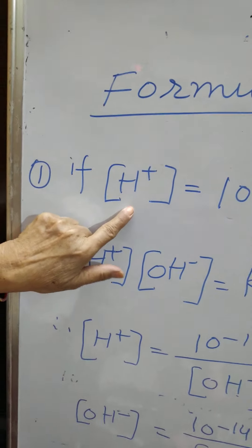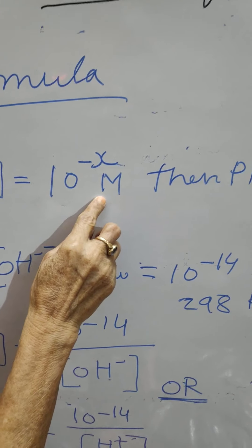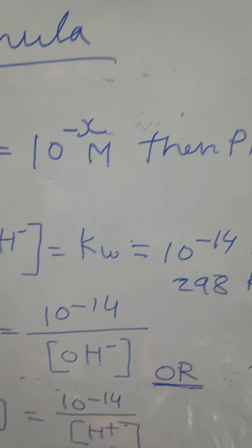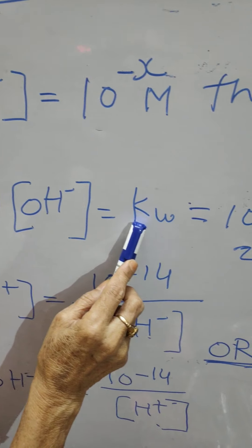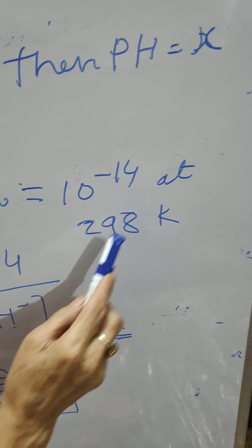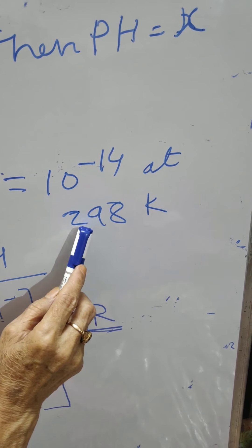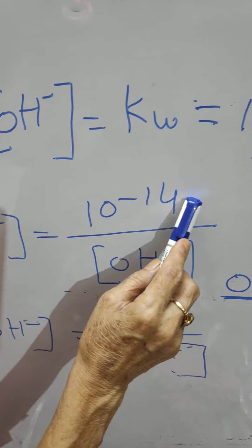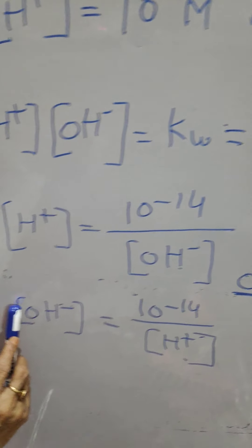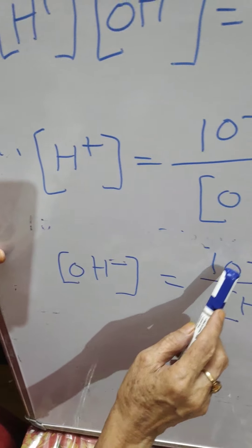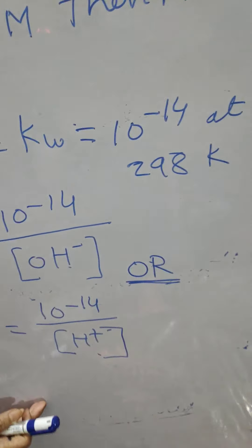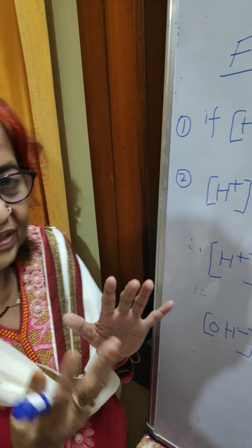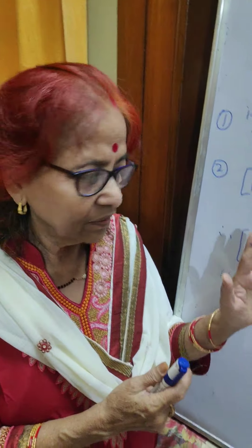The second formula: if H ion equals 10^-X M, then pH equals X. H ion × OH ion = Kw = 10^-14 at 298 Kelvin temperature. Therefore H ion = 10^-14 / OH ion. With the help of this formula, you can identify how strong or weak the acid or base is — moderate base or moderate acid — and solve your numericals.